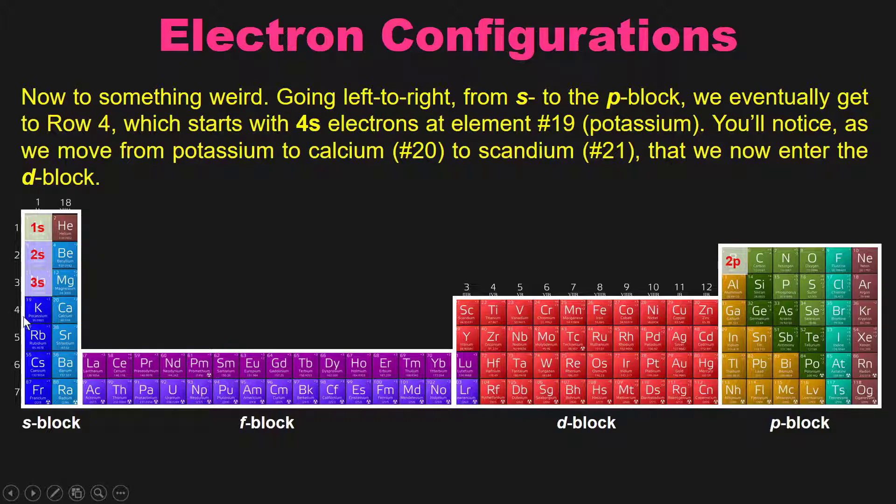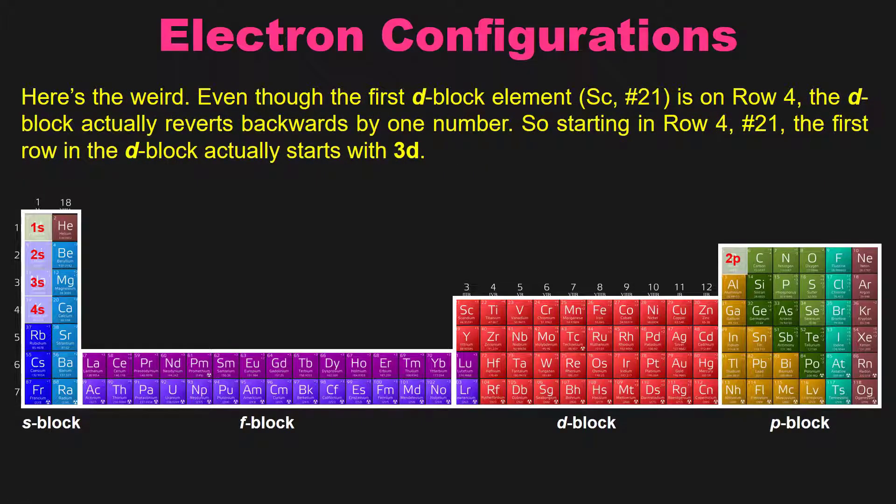But then I get to row 4. Now, row 4, something kind of weird will happen shortly. At row 4, I start, as I would predict, with 4s at element 19, which is potassium right here. You'll notice, however, that as I move here to the right, going from potassium to calcium number 20, over here to scandium, which is number 21. Scandium is in the D block. Now, here's the weird. Even though the first D block element, scandium number 21, is in row 4, the D block actually reverts backwards by one number. So starting in row 4, element 21, the first row in the D block is actually a 3d, not a 4d, as we would predict based on the row it's on.